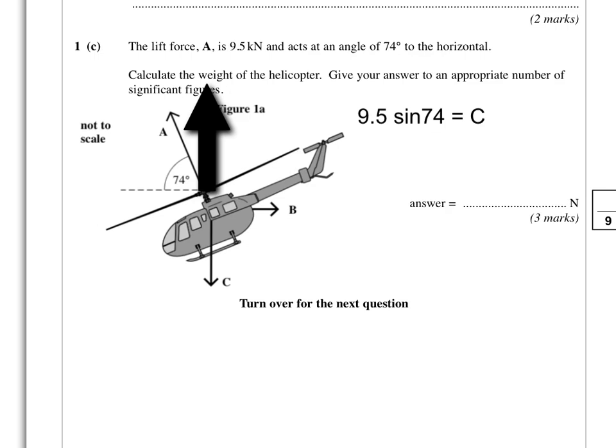So we've got 9.5 sin 74 equals C, and it must equal the weight C. I've kept it in kilonewtons. If we put that into our calculator, we'll end up with 9.131986, and that is in kilonewtons. But that is not an appropriate number of significant figures, so we just need to simplify that down.